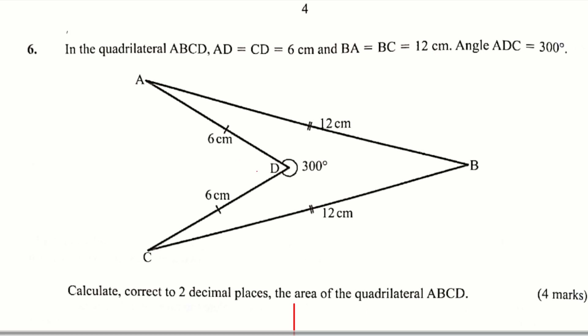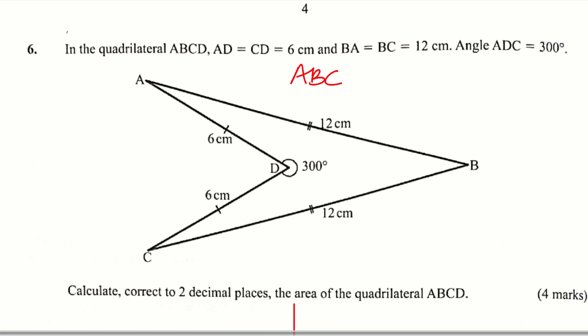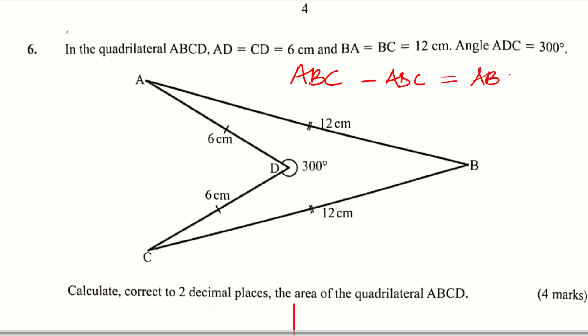Now look at this diagram — you notice that there are two triangles. The first triangle is ABC, then we have another triangle ADC. So this quadrilateral is made up of two triangles. In order to get the area of this quadrilateral, we shall get the area of triangle ABC, then we subtract the area of triangle ADC. That is what is going to give the area of the quadrilateral ABCD.